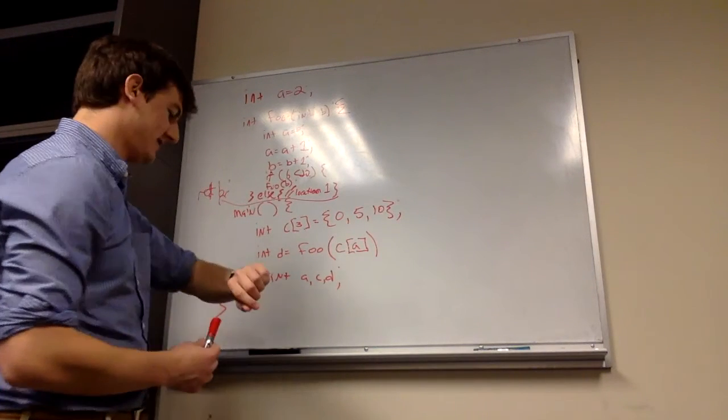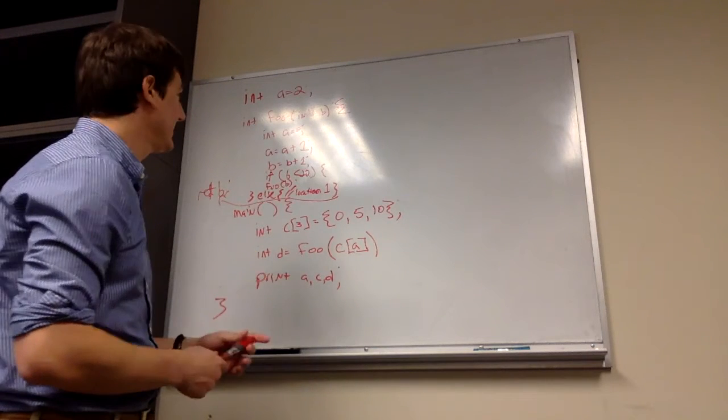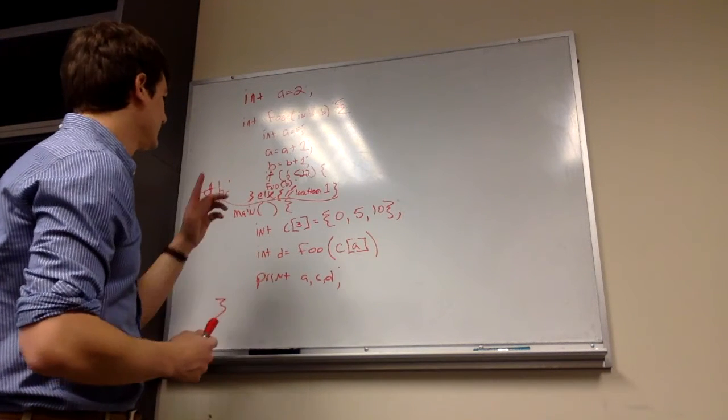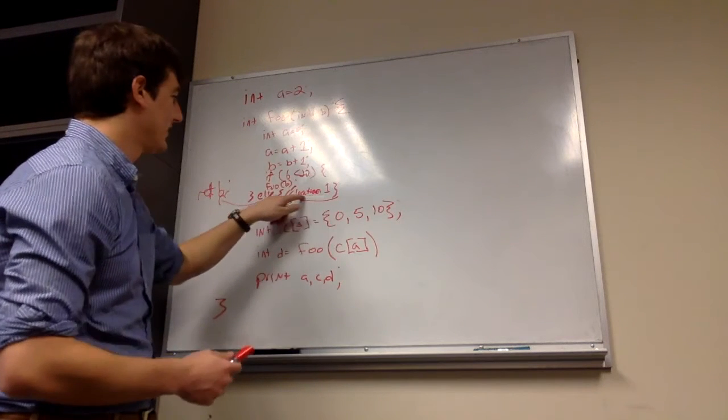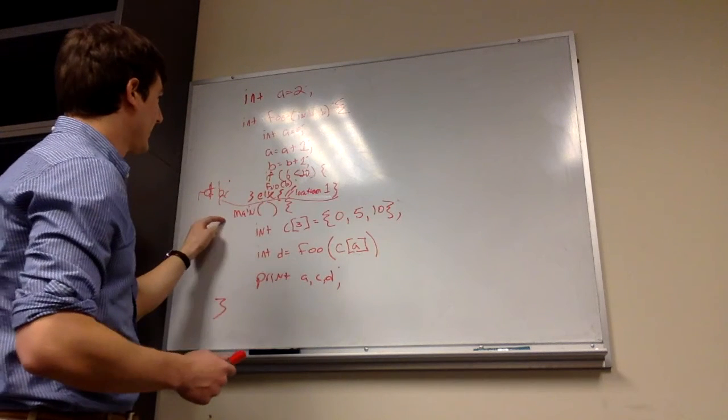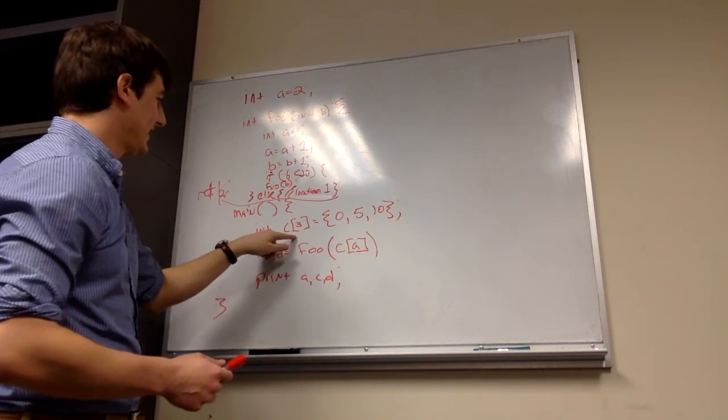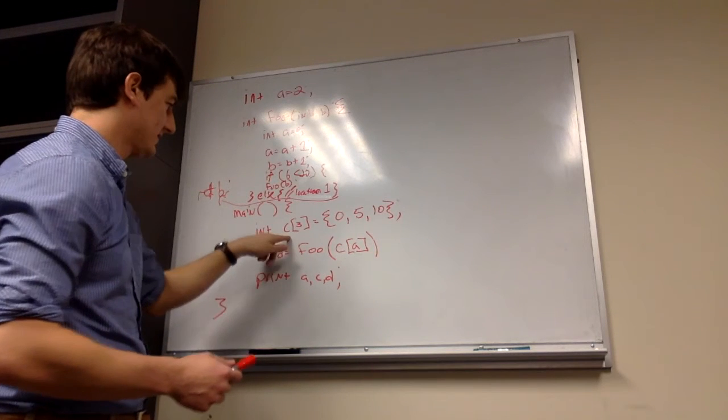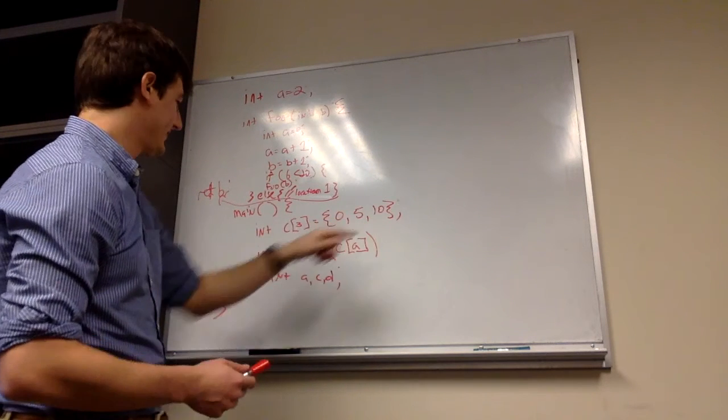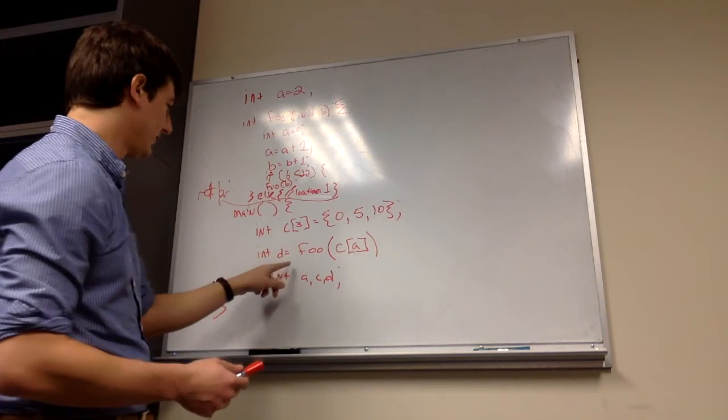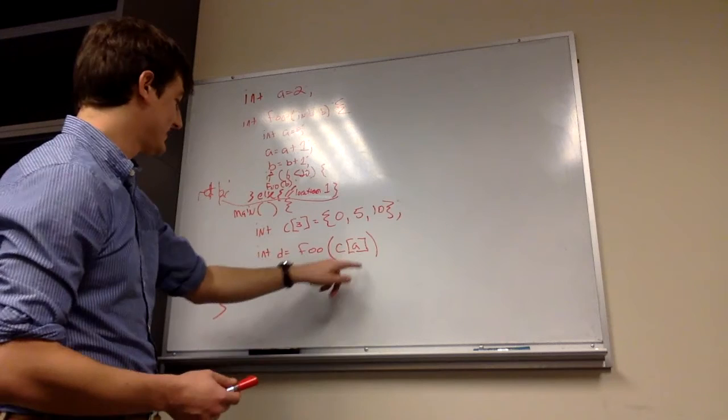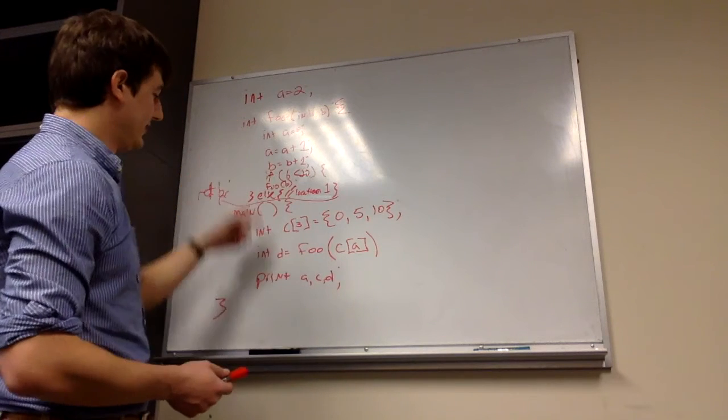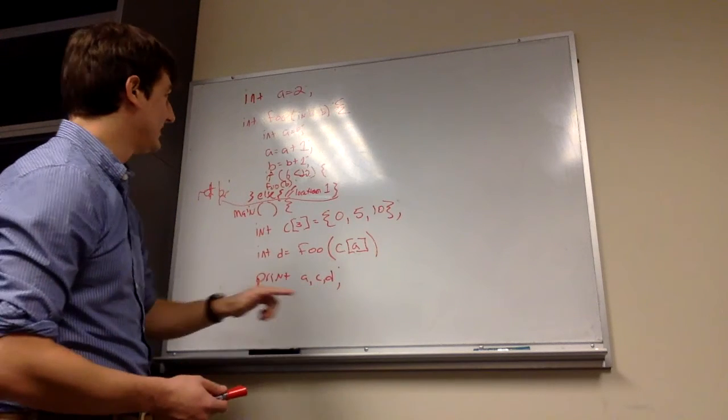All right, so we're here in office hours, November 16th, two days before midterm two. We're talking about how to draw the stack out, for instance, here at location one. We have a function main that defines an array called C of 0, 5, and 10, has another local variable D which is calling foo and passing in C of A.